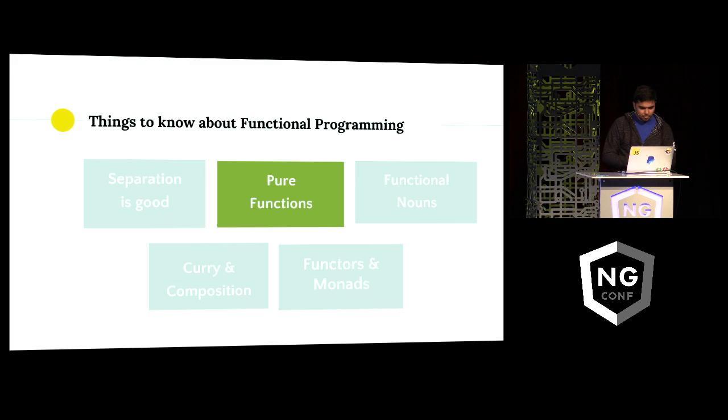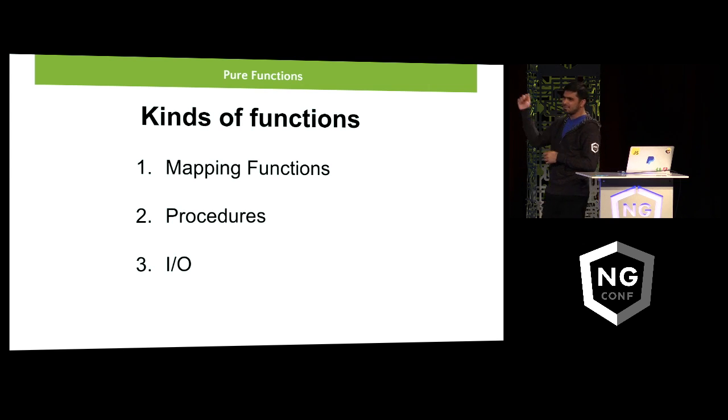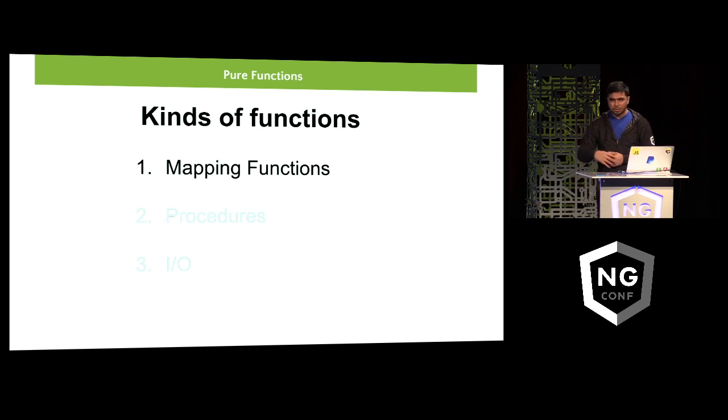So let's jump right into pure functions. We all have been writing three kinds of functions. So the first are mapping functions. So you pass in X, it converts it to Y and just returns the result. And then there are other types of functions like procedure functions and IO functions in which you have a step like do this and then do this and then you produce a lot of side effects. So we'll be concentrating only on mapping functions while talking about purity.